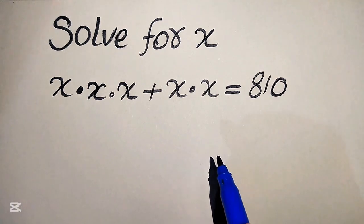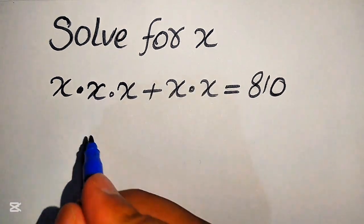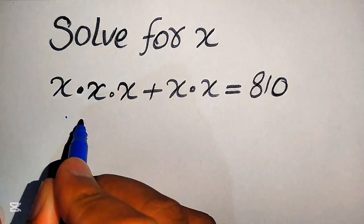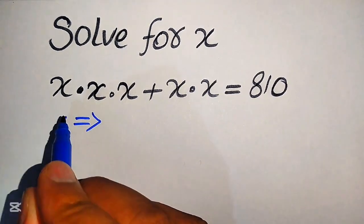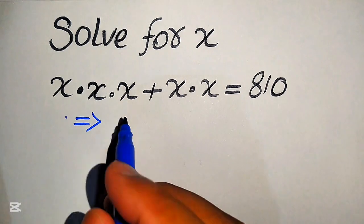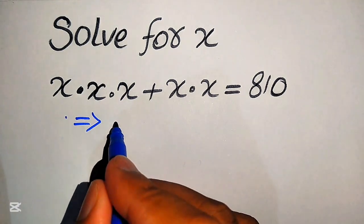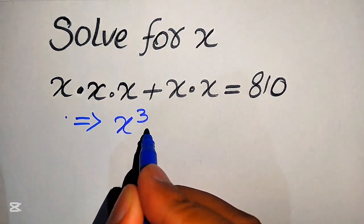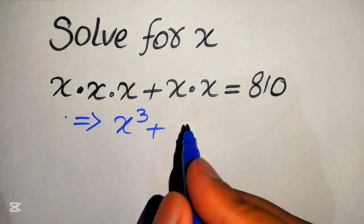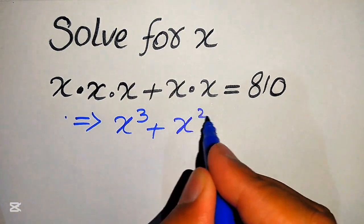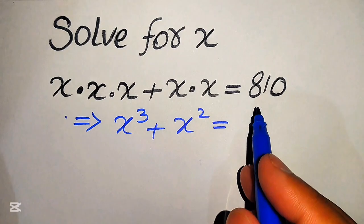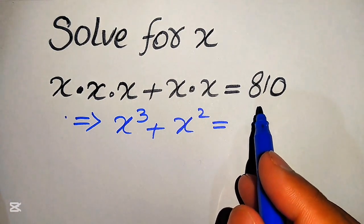The very first thing we are going to do is rewrite this equation. If any number is multiplied three times, we write it as x cubed. And here, x is multiplied two times, so we write it as x squared. This whole equation equals 810.